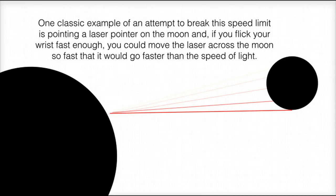One classic example of an attempt to break the speed limit is pointing a laser pointer on the moon, and if you flick your wrist fast enough, you could move the laser across the moon so fast that it would go faster than the speed of light.